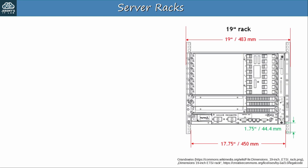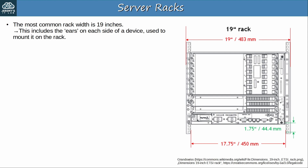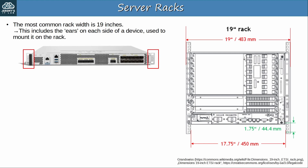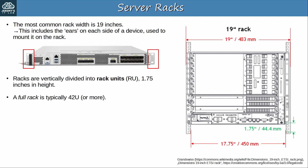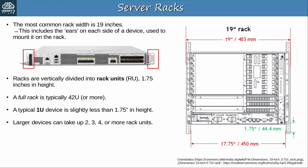Now let's look at the dimensions of a rack. The most common rack width is 19 inches, or 483mm. This includes the ears on each side of a device, used to mount it on the rack. Here's a Cisco switch — notice the ears on each side; that's how you mount the device on the rack. Racks are vertically divided into rack units, RU, each one 1.75 inches in height. A full rack is typically 42 rack units or more, but racks come in various sizes. Note that you might see a rack's height or a device's height written as RU, rack units, or just U, units. A typical 1U device is slightly less than 1.75 inches in height, so it fits within the 1 rack unit dimensions. Larger devices can take up 2, 3, 4 or more rack units.